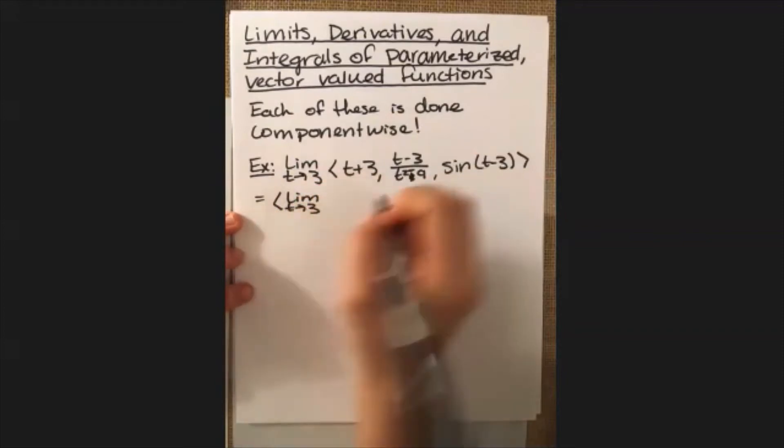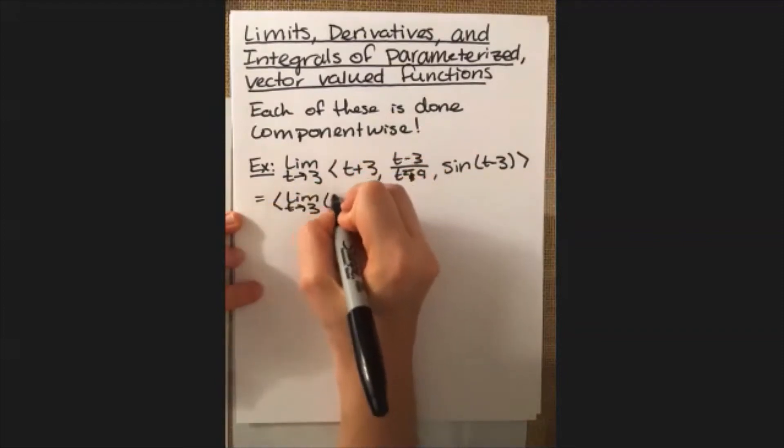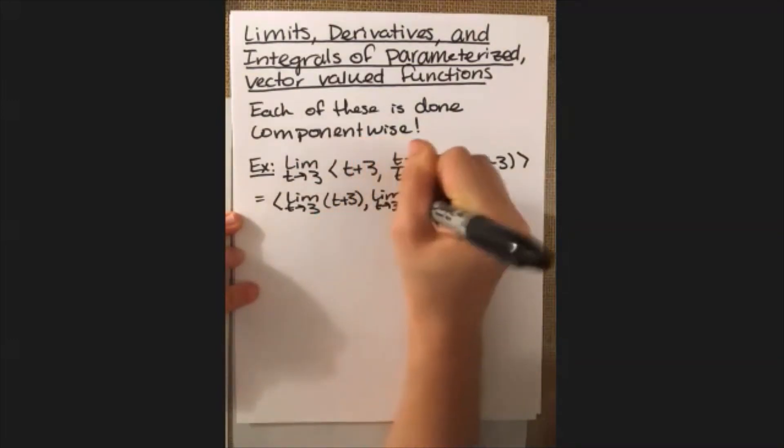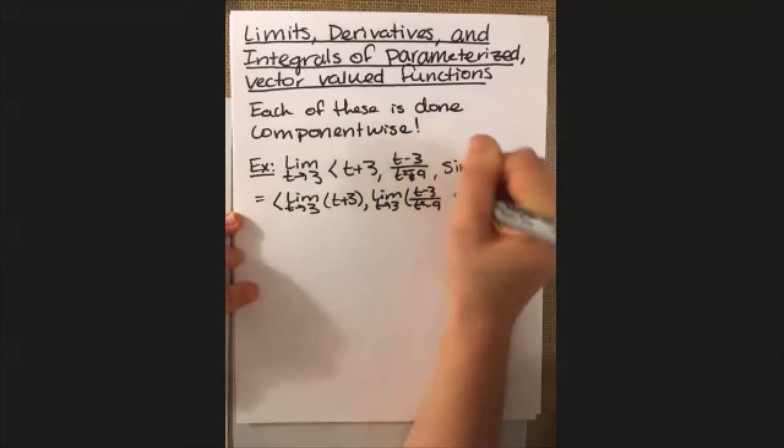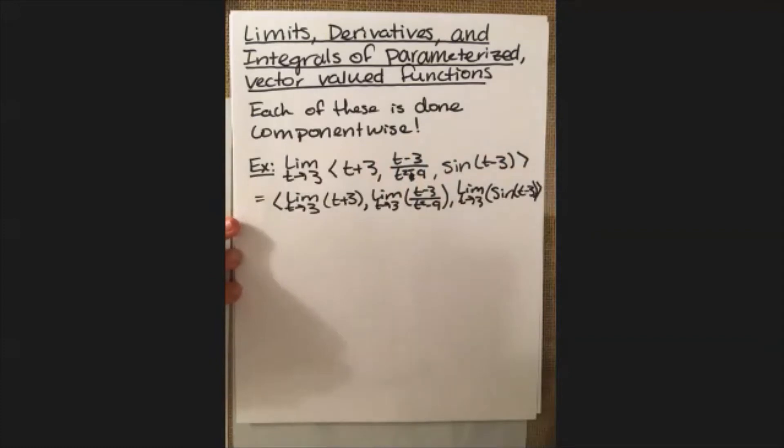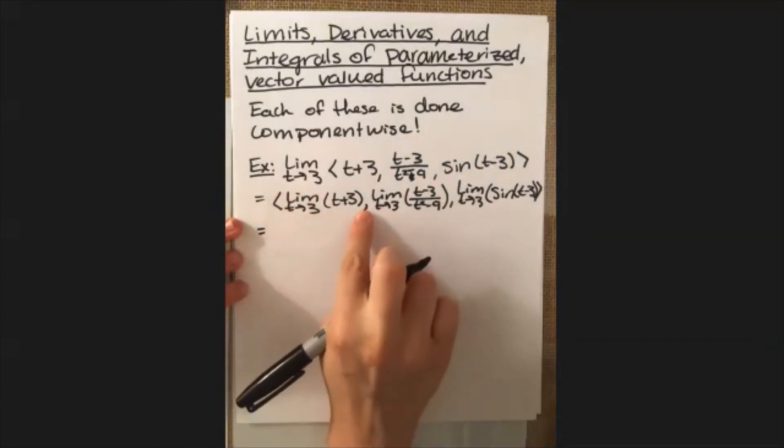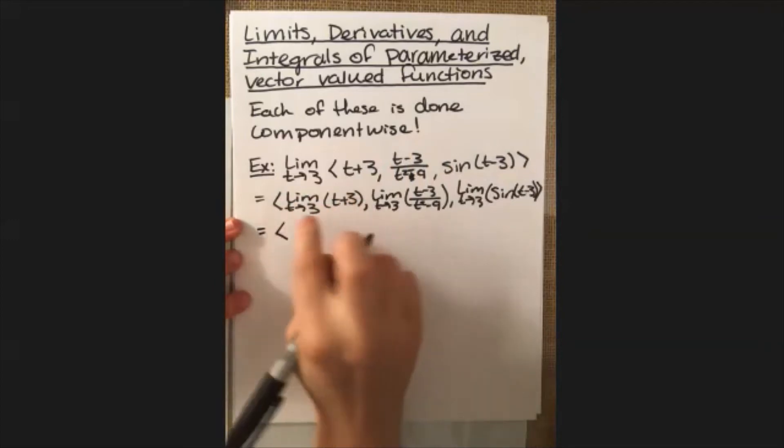So I can rewrite the problem as the limit as t approaches 3 of t plus 3, and then the limit as t approaches 3 of t minus 3 divided by t squared minus 9, and then the limit as t approaches 3 of sine of t minus 3. All we got to do is just evaluate each one of these limits. In this particular one, it's really quite easy. We can do direct evaluation and just plug the 3 in for t and we get 6.